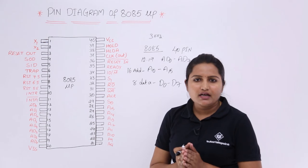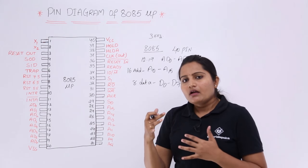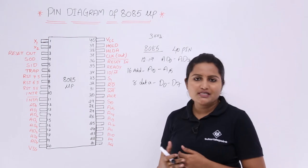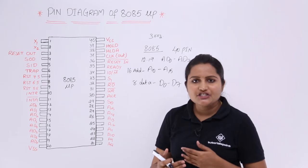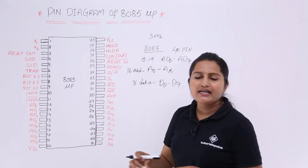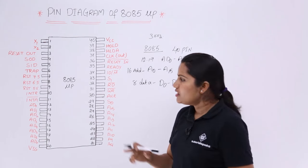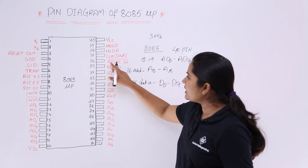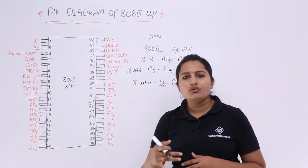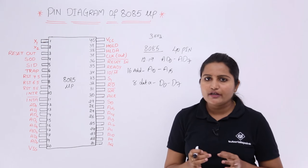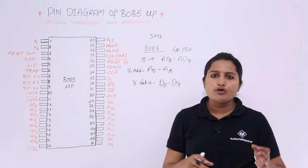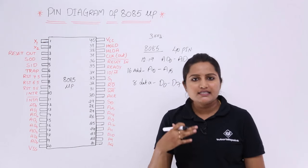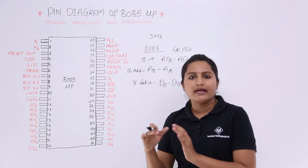The READY pin is used because the microprocessor operates at a higher frequency than the peripheral devices connected to it. After completion of each task it provides a ready signal, which goes to 1 after every operation. RESET IN is an active low signal — when it goes to 0, the microprocessor resets. Reset In resets the microprocessor itself, while Reset Out resets the devices connected to the microprocessor.